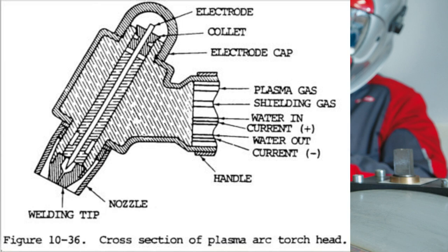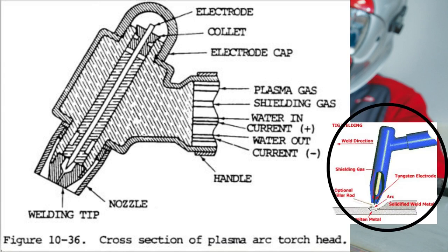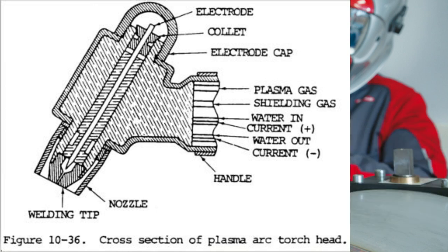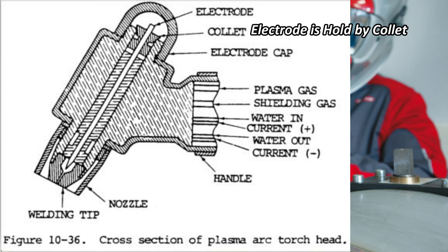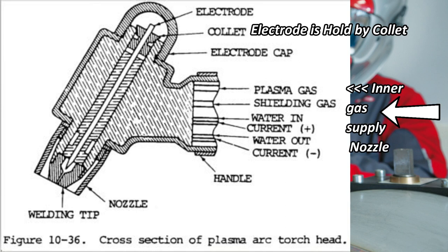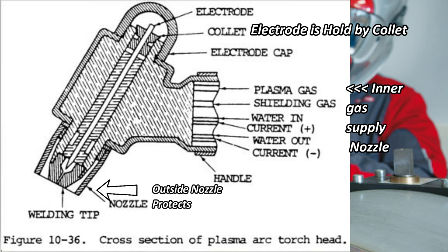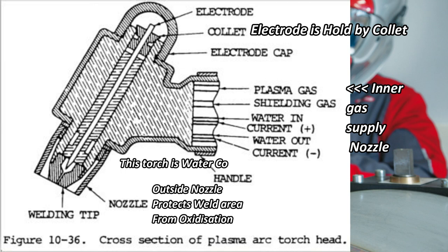The torch is the most important part of plasma arc welding. It is quite similar to TIG welding torches but more complex. It consists of four main parts: tungsten electrode, collets, inner nozzle and outer nozzle. The tungsten electrode is held by the collet, which is available in varying diameters. The inner gas nozzle supplies inert gases inside the torch to form plasma, while the outer nozzle supplies shielding gases to protect the weld area from oxidation. These nozzles wear out rapidly. Plasma arc torches are water cooled because the arc is contained inside the torch which produces high heat, so a water jacket is provided outside the torch.